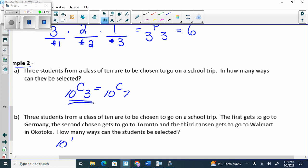10C3, this order doesn't matter. It's the same as 10C7. This one, they get to go on different trips, so 10P3. Could I put 10P7? No. Very good.